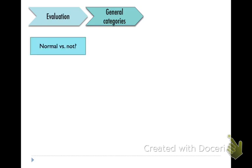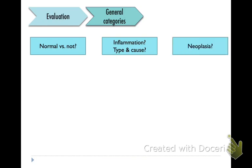So first you want to think about whether what you're looking at is normal or if it's an abnormal finding, meaning could it be something that's there in the tissue that's normally there or is it something that's not supposed to be there. And then you can think about whether you have inflammation present, and if you do have inflammation what is the type and is there a cause for it being there. And then whether or not you have neoplasia present.